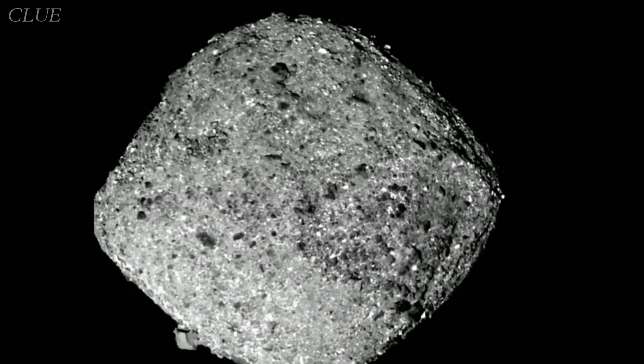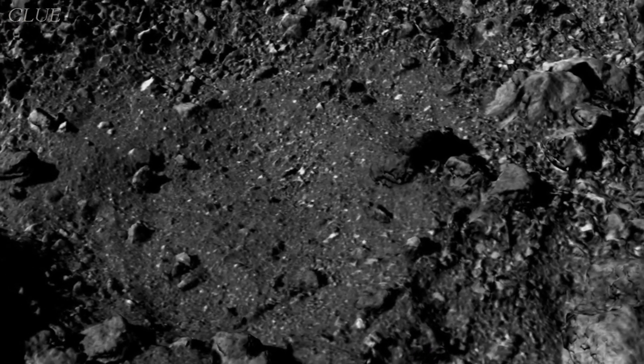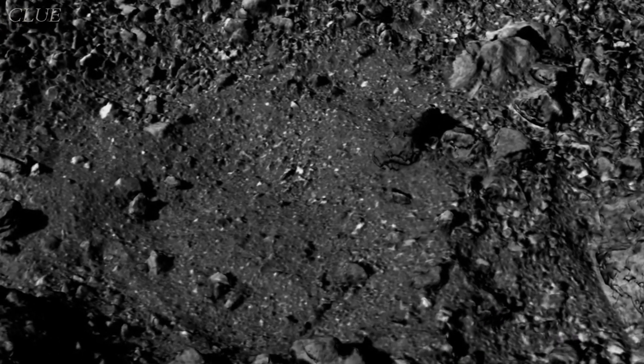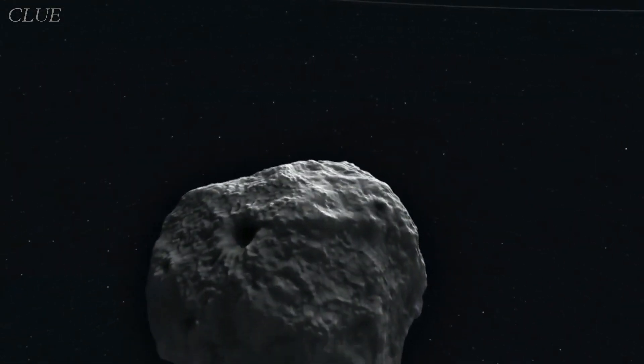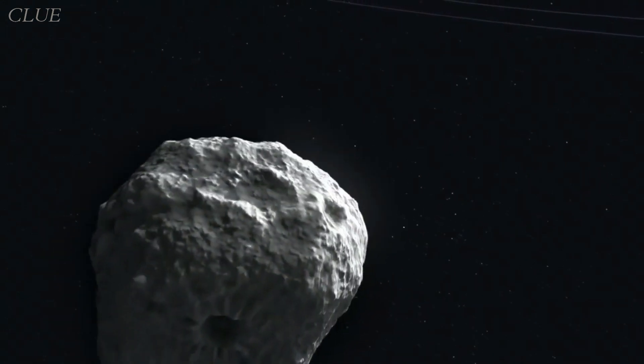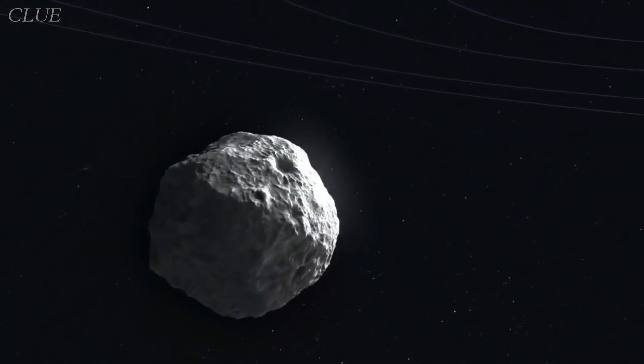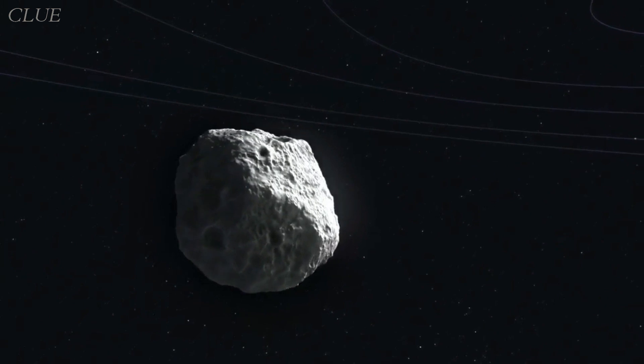With its classification as a B-type asteroid, a subtype to the carbonaceous C-type asteroids, Bennu is considered a primitive asteroid, which means it didn't undergo huge geological changes since its formation. These unaltered remnants from the early universe make it a celestial gem.